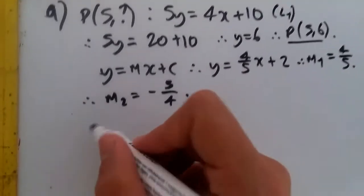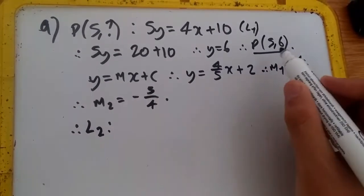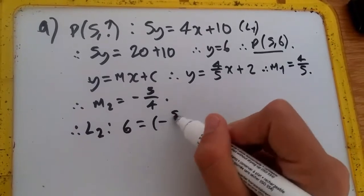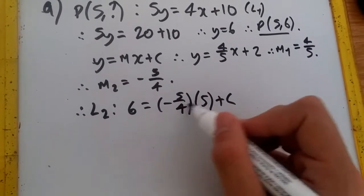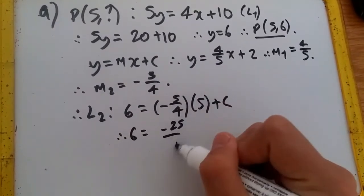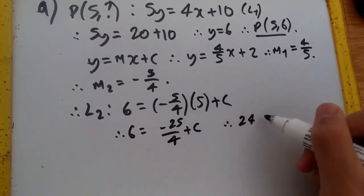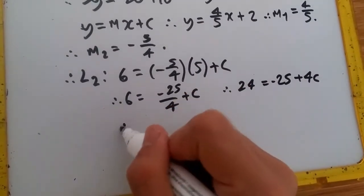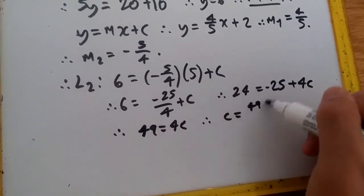To find the equation L2 now, all we have to do is use y = Mx + C and replace with our coordinates at P and our new gradient. So y is 6 = M is -5/4 times x is 5 plus C. Expanding this gives us -25/4. So we have 6 = -25/4 + C. Times everything by 4, we get 24 = -25 + 4C. Add 25 across, we get 49 = 4C and therefore C = 49/4.